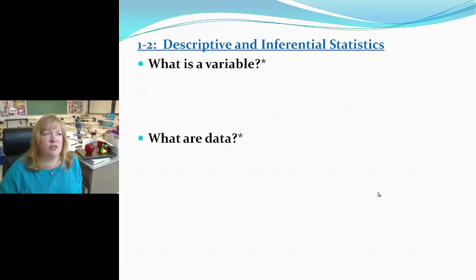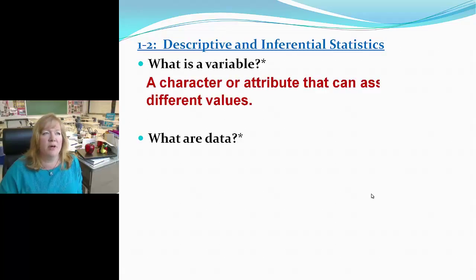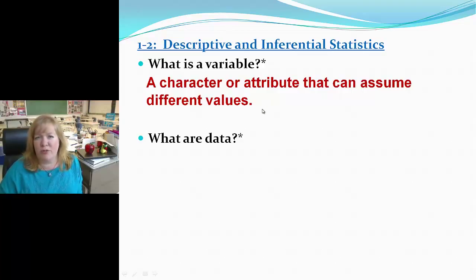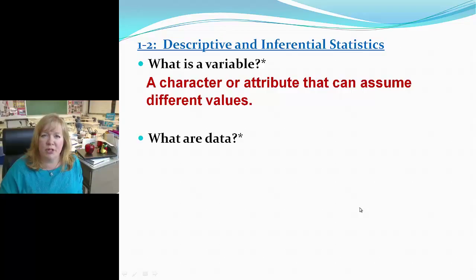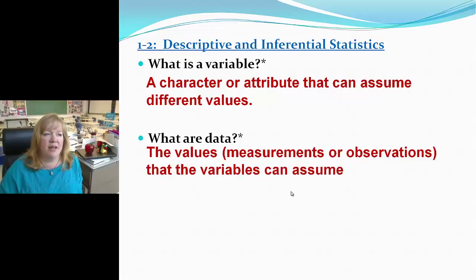Descriptive and inferential statistics. What is a variable? In statistics, it's a characteristic or attribute that can assume different values — just like x can assume different values in algebra. What are data? Data is a plural word — the values, measurements, or observations that the variables can assume. That's the data.